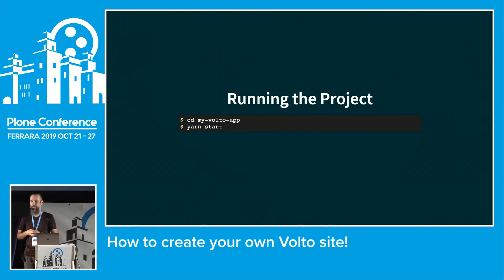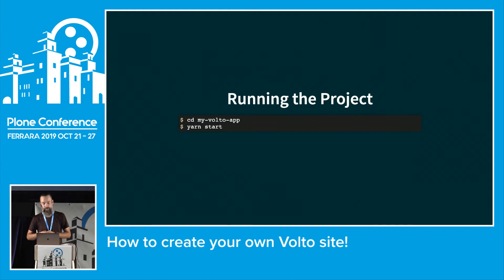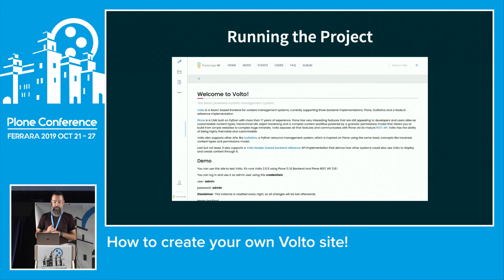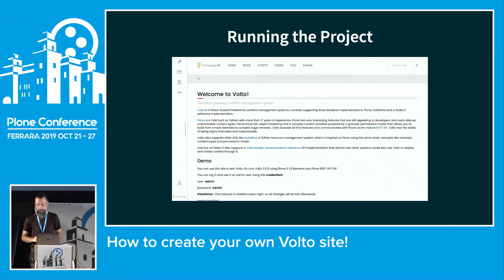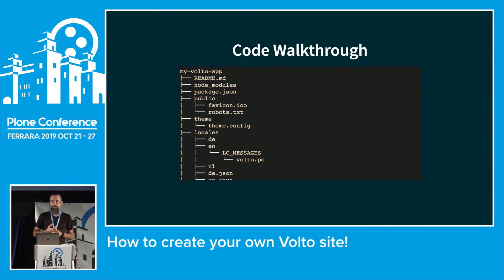After that you can run your project by going to the newly generated folder and typing yarn start. Yarn is the package manager for Node.js. If all went well you'll see something like the plain Volto site — nothing customized, just the default as a starting point.